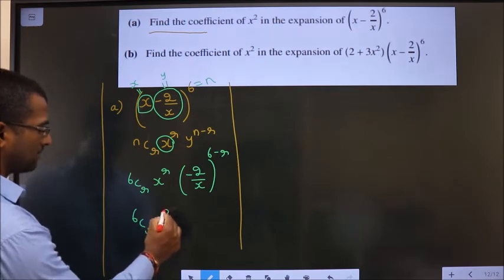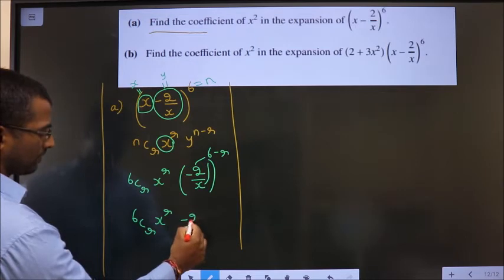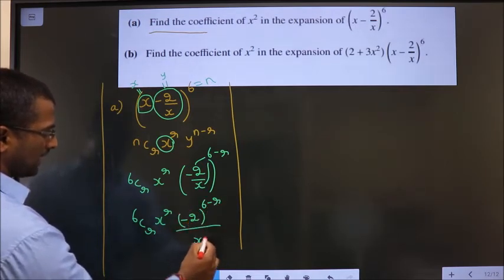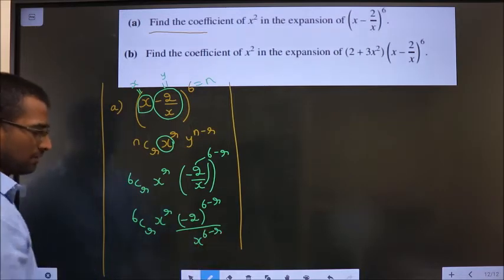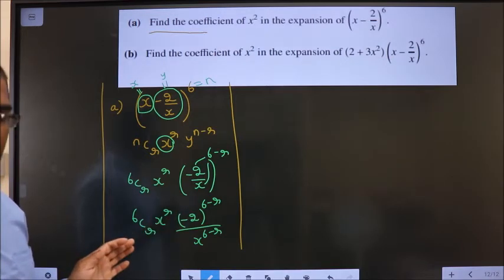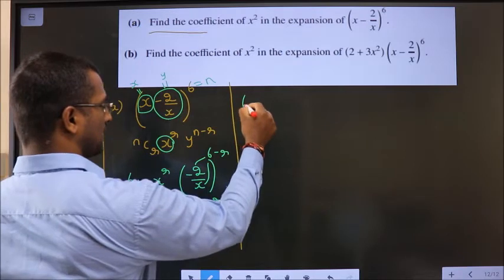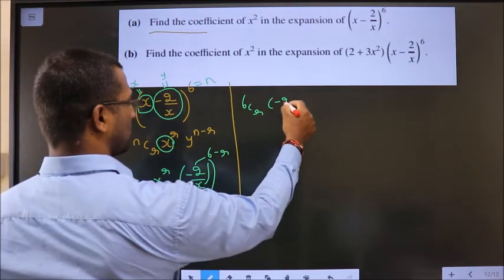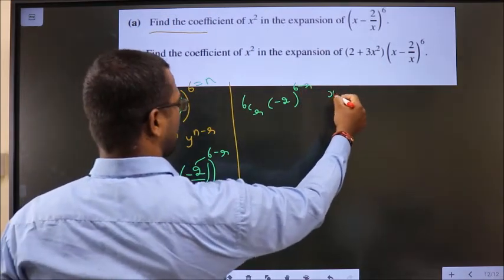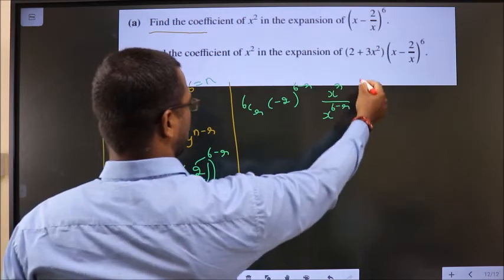6Cr, x power r. Apply the power to each. So, that is minus 2 power 6 minus r by x power 6 minus r. Now, write x at last. Write x term, x at last. So, that is nothing but 6Cr. I write minus 2 before, and x at last by x power 6 minus r.